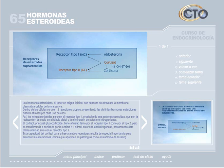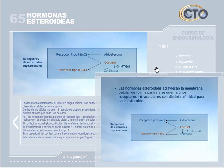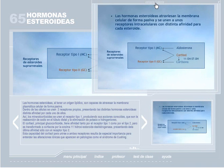El cortisol, principal glucocorticoide, tiene afinidad tanto por el receptor tipo 1 como por el tipo 2, pero es transformado a cortisona por la enzima 11-hidroxiesteroide deshidrogenasa, presentando esta última afinidad solo con el receptor tipo 2. Esta capacidad del cortisol para unirse a ambos receptores resulta de especial importancia para entender las alteraciones iónicas que aparecen en patologías como el síndrome de Cushing.